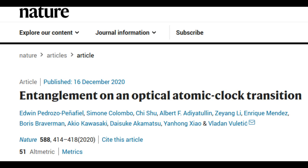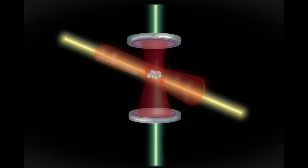The atoms are correlated in a way that is impossible according to the laws of classical physics, and that allows the scientists to measure the atoms' vibrations more accurately. The new setup can achieve the same precision four times faster than clocks without entanglement.